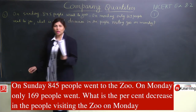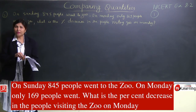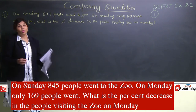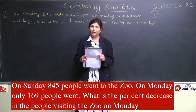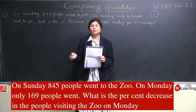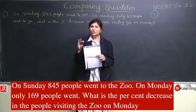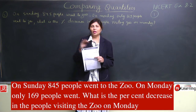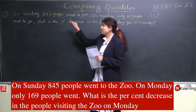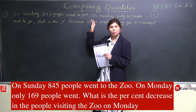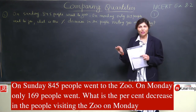Maine aapko isliye bola ki yeh day-to-day life se related hai. Sunday generally off rehta hai, sabka holiday rehta hai, to Sunday bahut saare log jaate hain outing pe. Zoo bhi agar jaenge to Sunday zyada log jaenge instead of Monday, kyunki Monday working hota hai. To Monday jo bhi zoo mein jaane waale honge, wo less honge.